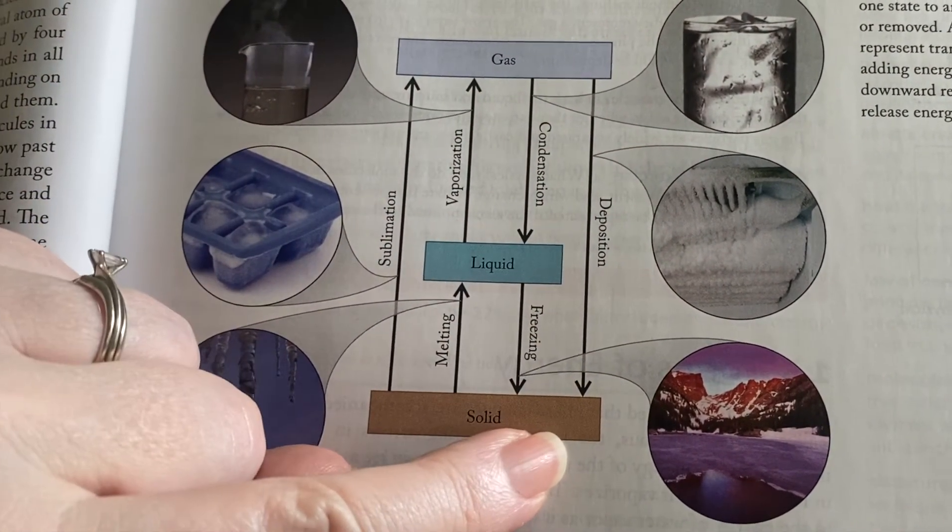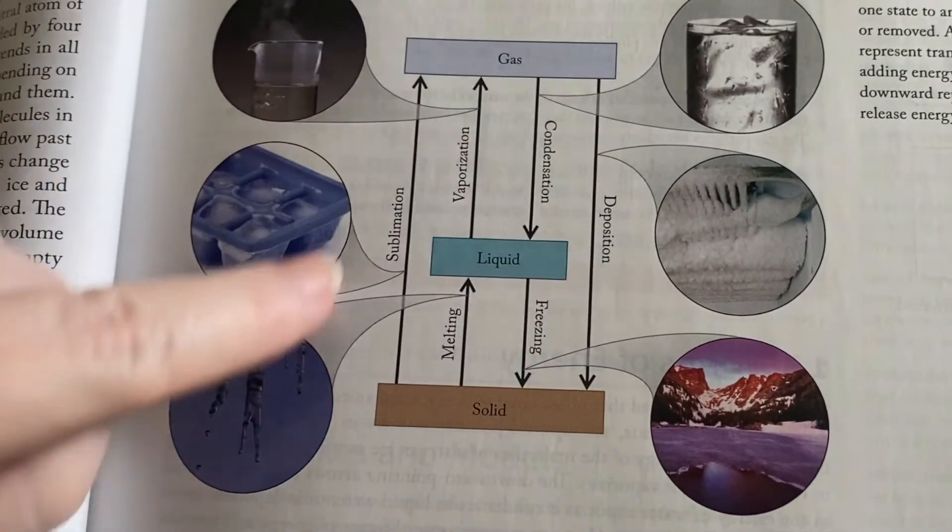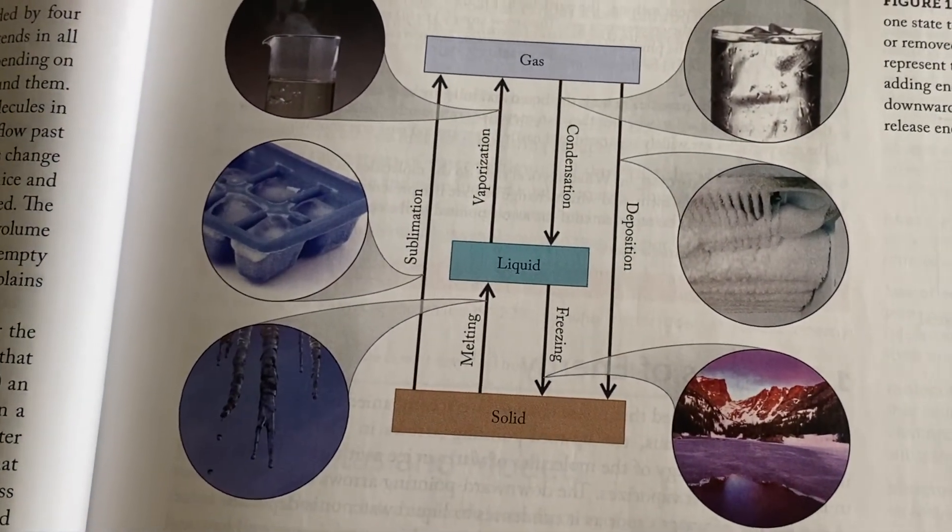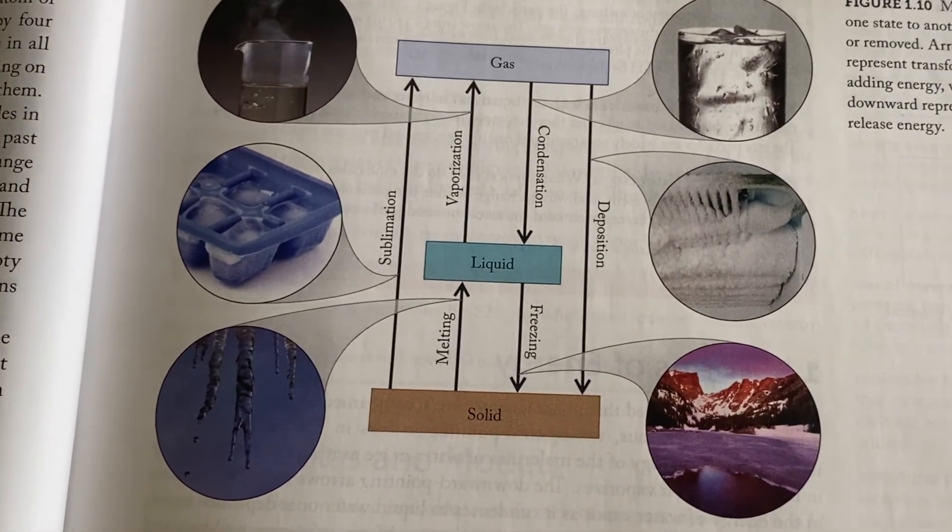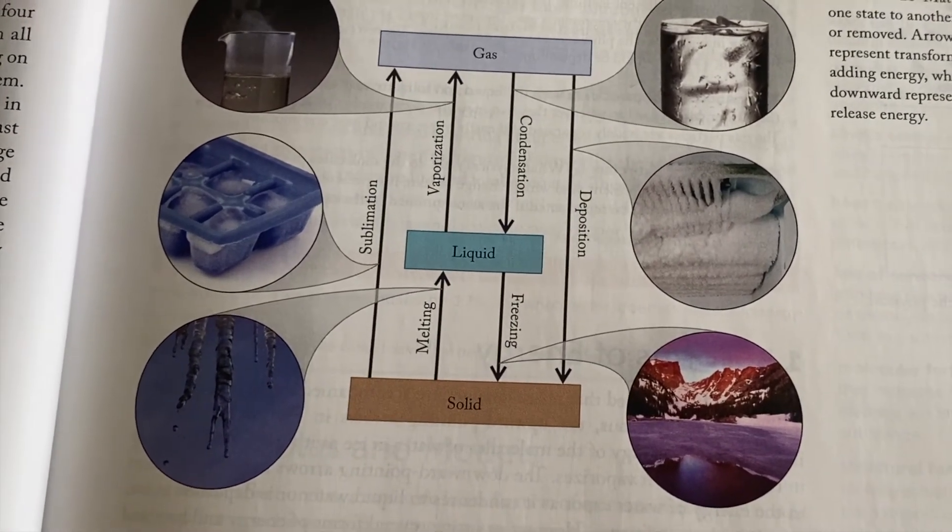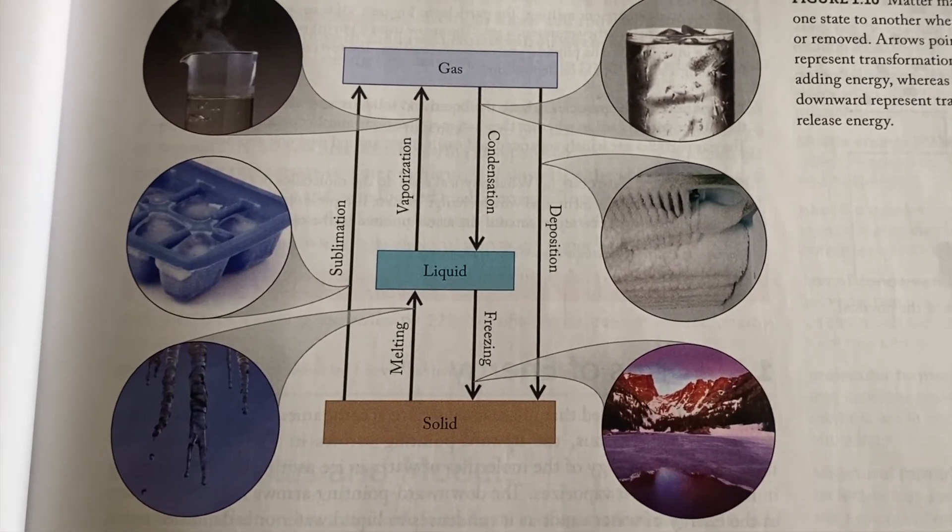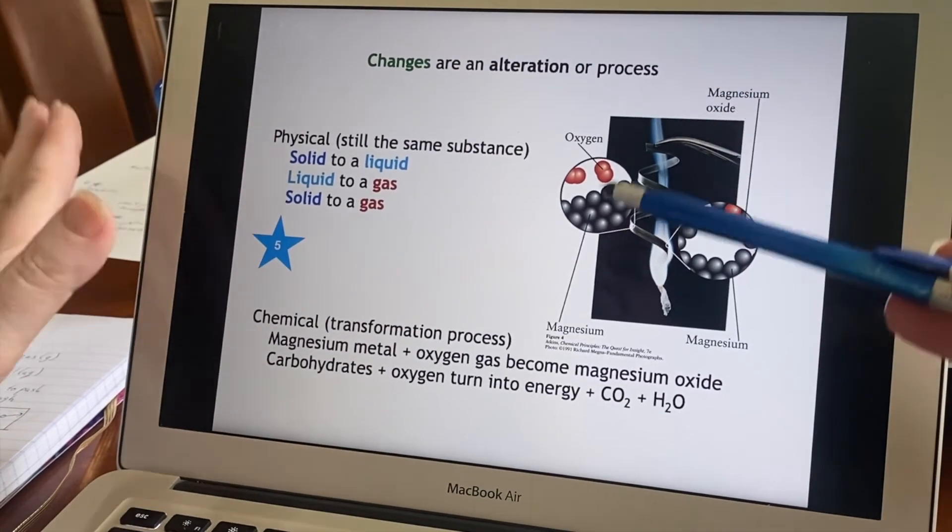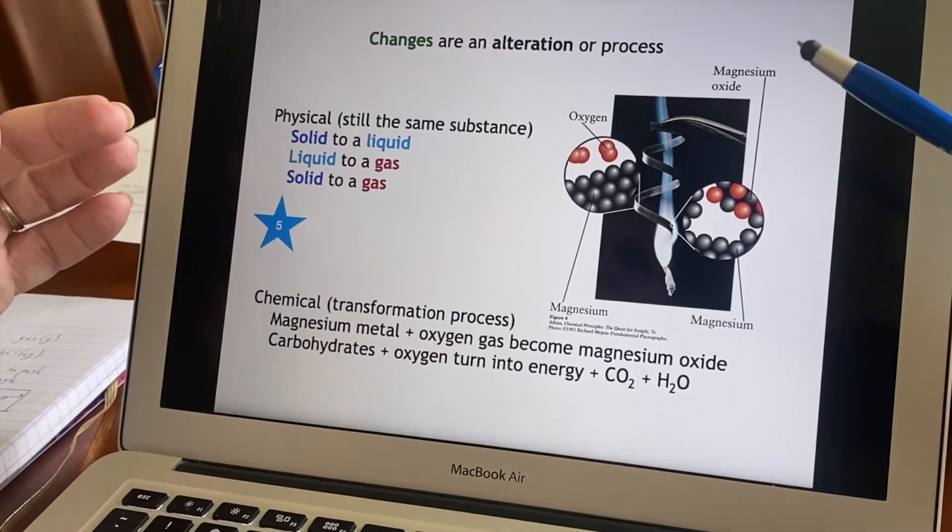Then there is taking a gas and turning it directly into a solid. That is called deposition. So you should know all these different names of how these transformations are labeled. What happens if I say deposition? Then you should be thinking, okay, that's a gas and it's turning into a solid. Deposition—they do a lot of that in Silicon Valley when they're making printed circuit boards. They do it by deposition. The physical, it's still the same substance, we're just changing what state it is in.